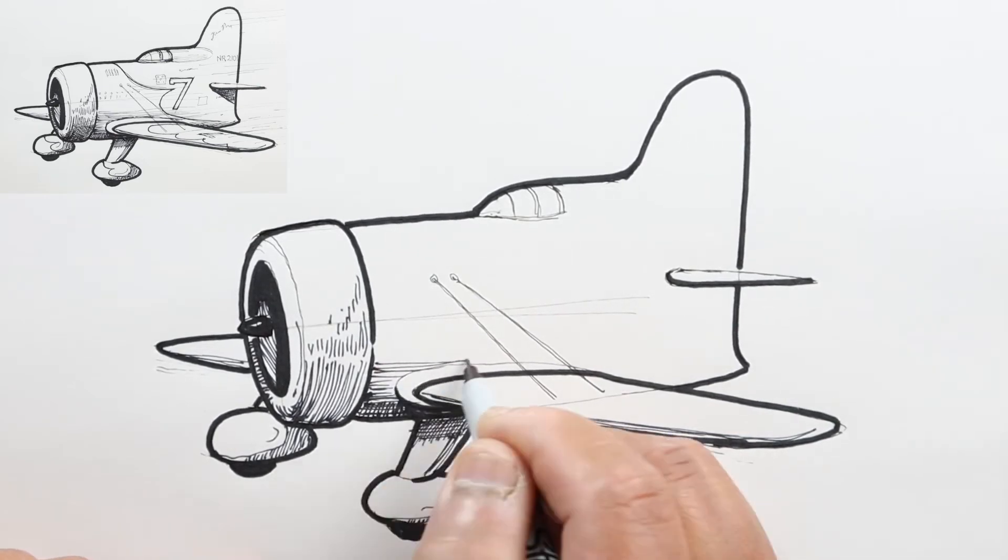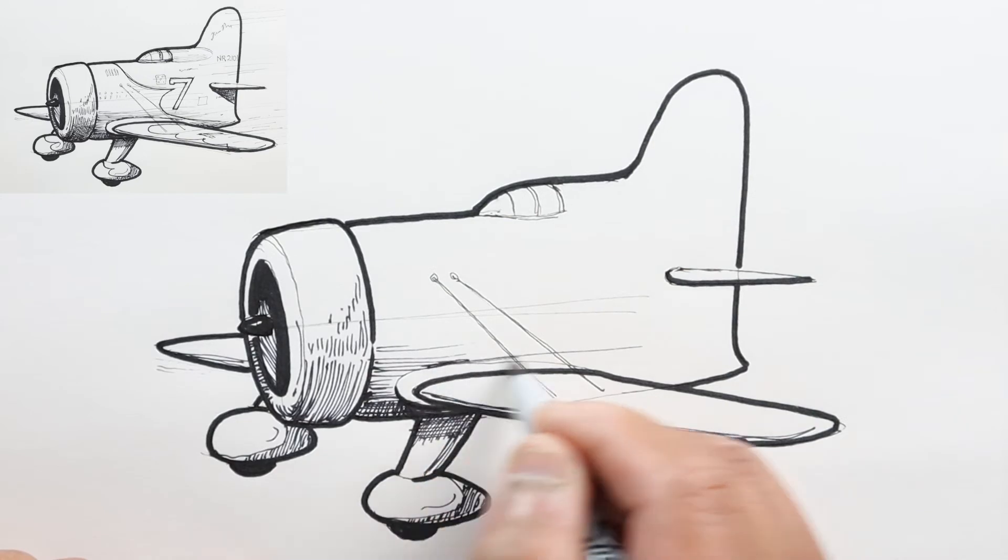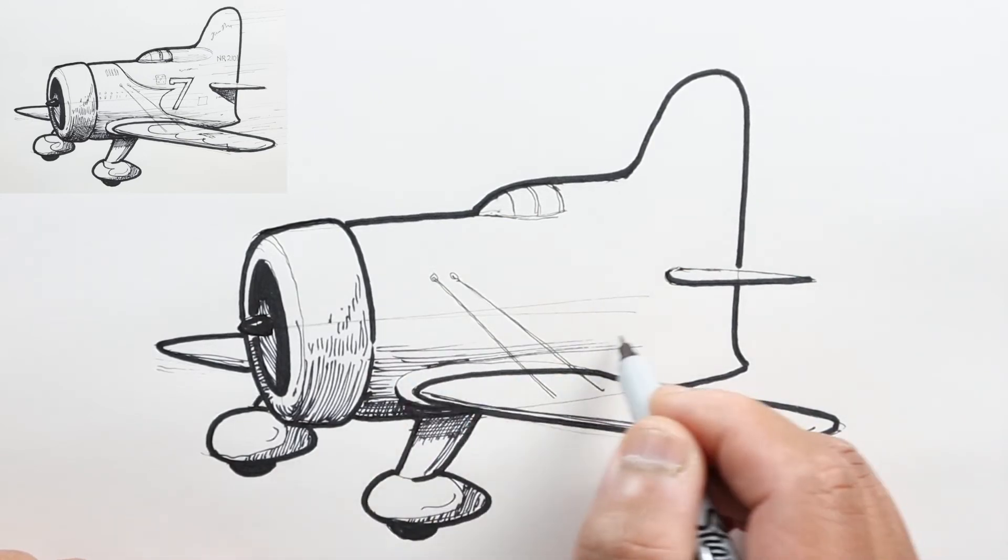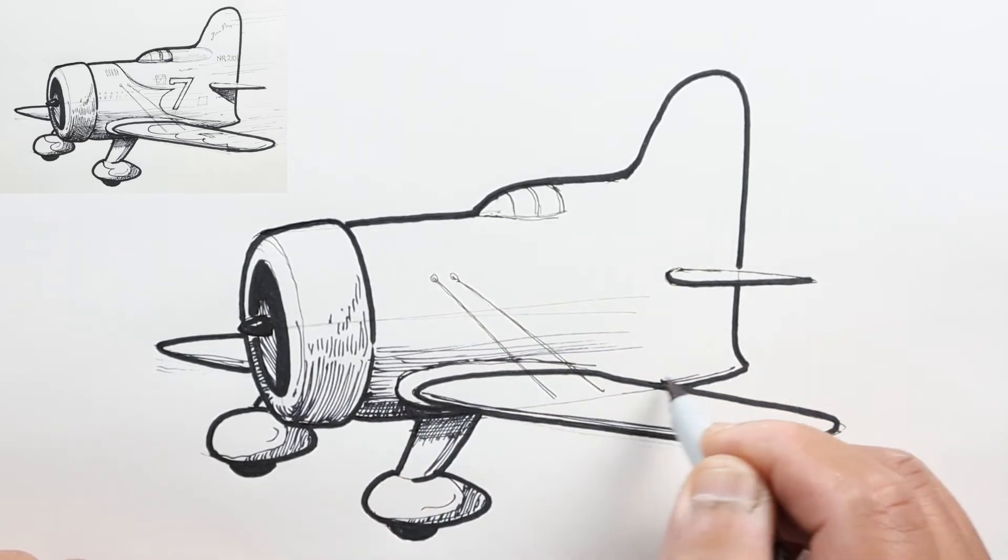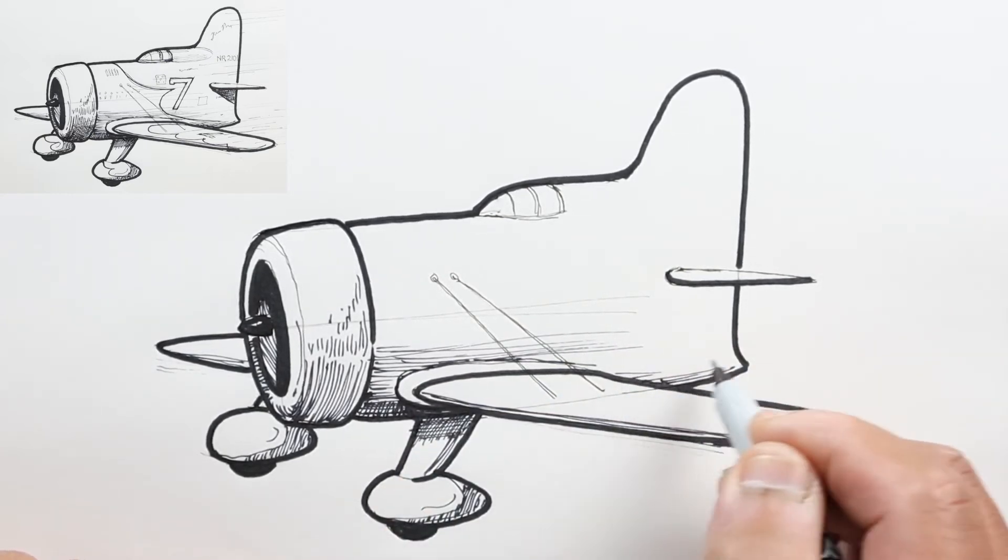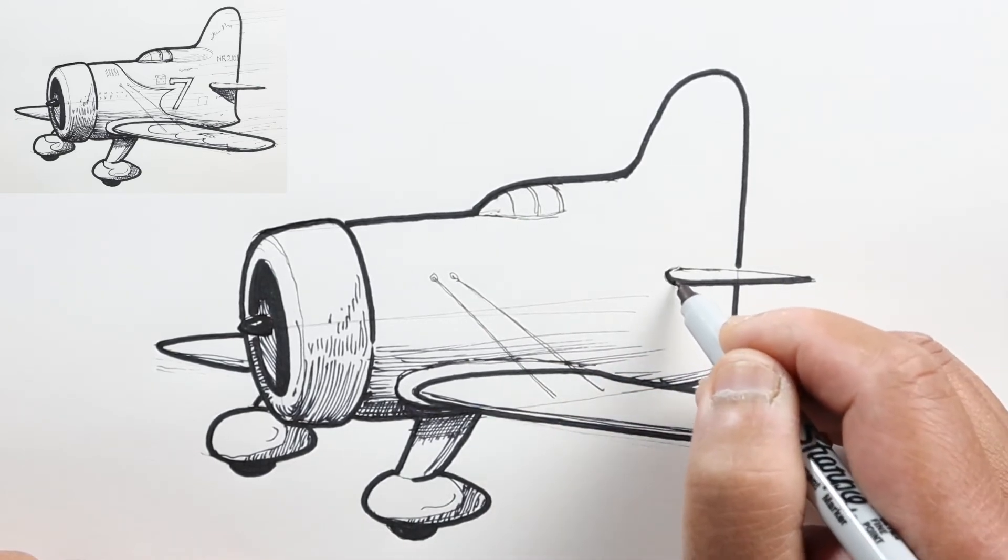Here I changed the direction of my shading lines to follow the direction of the fuselage. This part gets flat, so I'm not going to do too much here.